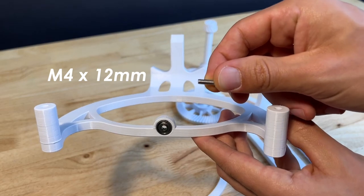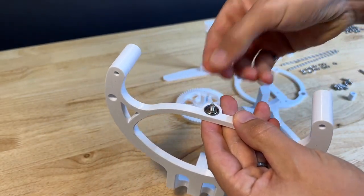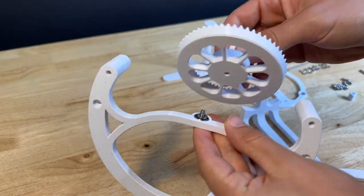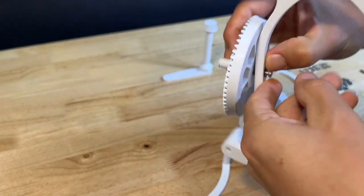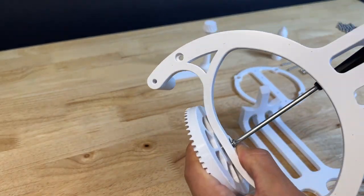Using an M4 by 12 millimeter screw, slide it through the back of this bearing. Throw two washers on the end of that. And then grab your big gear and that will screw into this hole. Just note that I've changed the design slightly from this model, so your gear will look a little bit different but it will work better than this one.